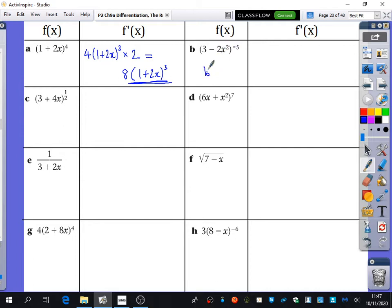What would that normally differentiate to? Minus 5 bracket, minus 2x over here. Yep. To the power of minus 4.